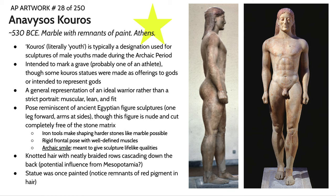This particular Kouros was intended to mark the grave site of a fallen warrior, which was the most common use for Kouros statues. Some were also made as offerings to gods or intended to represent the gods themselves in temples. What you see here is a general and not super personal representation of an ideal warrior rather than a strict portrait of the person buried. We have this very muscular, lean, and fit figure, with a lot of similarities to ancient Egypt in terms of these idealized proportions and musculature, as well as this pose very reminiscent of ancient Egyptian figural sculpture.